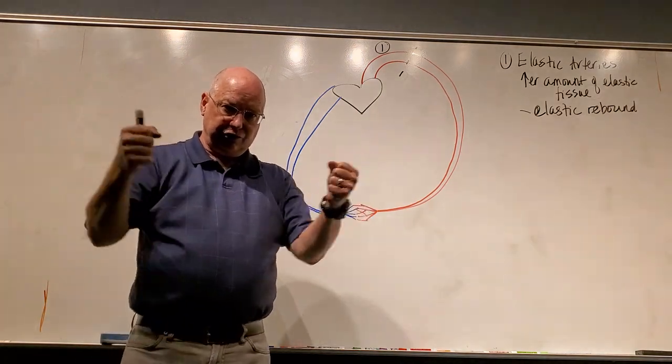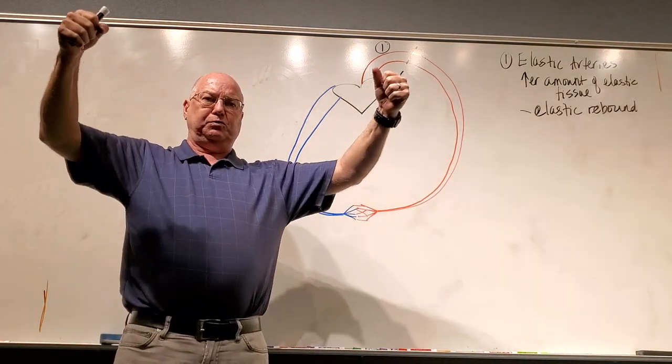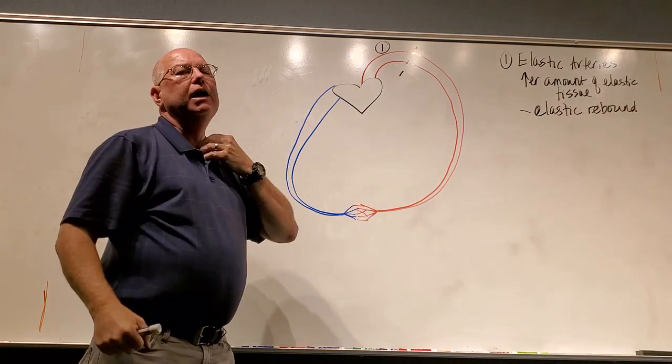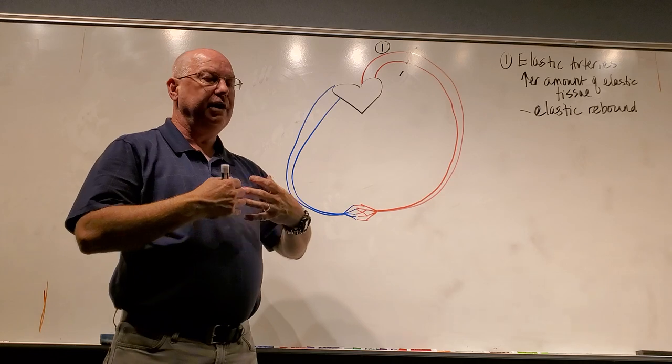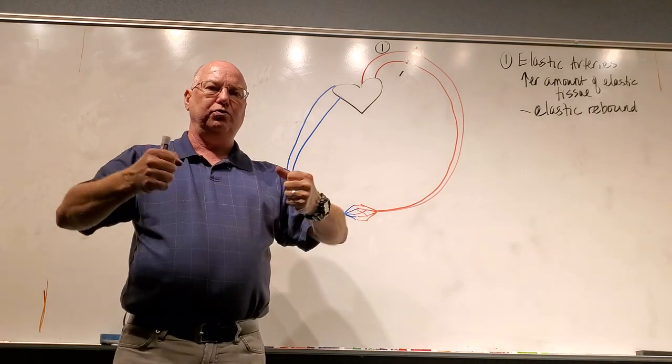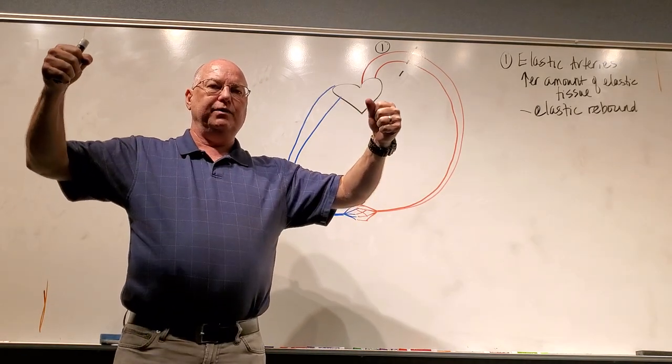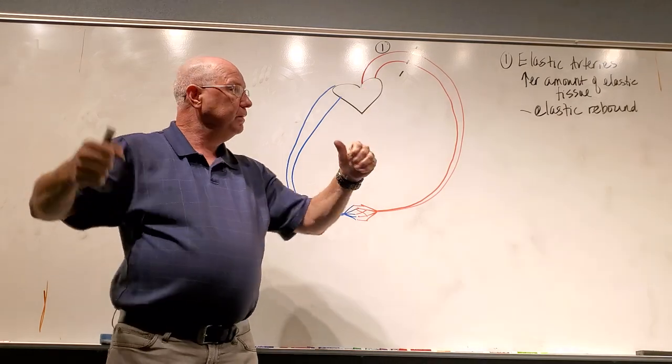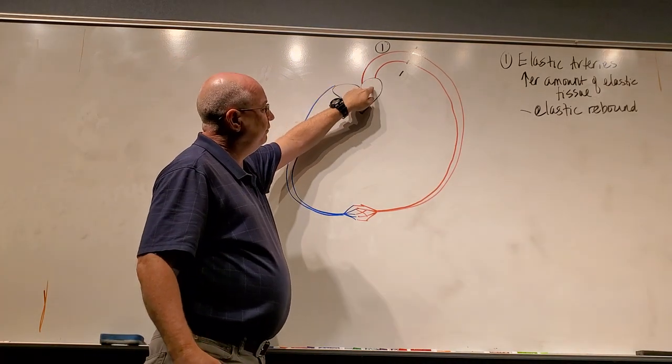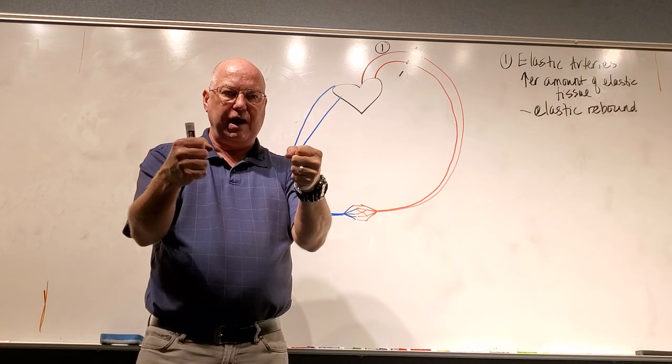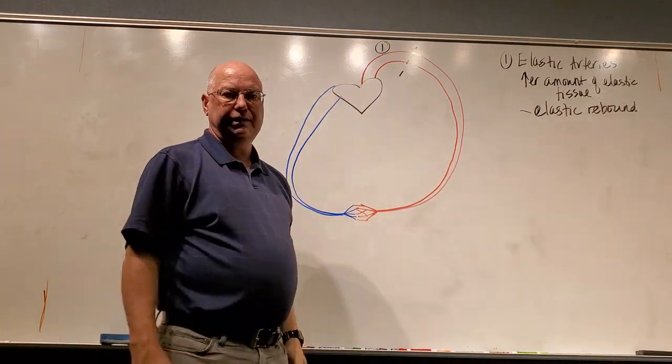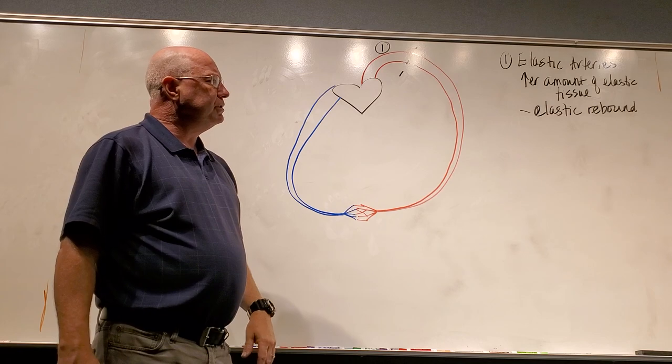This allows for what we call the elastic rebound. And the elastic rebound can assist downstream blood flow. What happens when the left ventricle contracts is the aorta will expand under all this pressure, as well as the carotids and a little bit of the subclavians, the brachiocephalic. All of those branches closest to the heart will start to expand. And when they snap back, if the valve at the base of the aorta, the aortic valve is closed, when they squeeze back and snap back, it forces even more blood downstream. So they undergo elastic rebound.